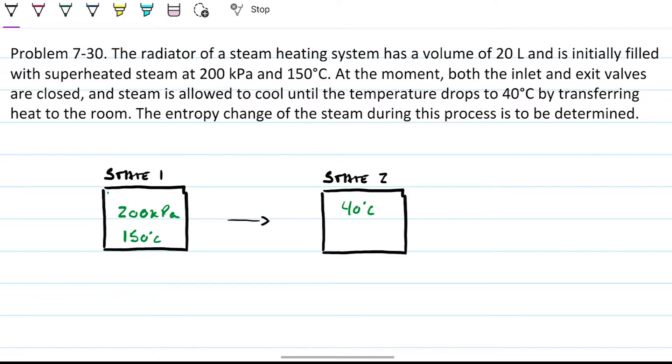The problem statement reads: the radiator of a steam heating system has a volume of 20 liters and is initially filled with superheated steam at 200 kilopascals and 150 degrees Celsius. At the moment, both the inlet and exit valves are closed, and steam is allowed to cool until the temperature drops to 40 degrees Celsius by transferring heat to the room.